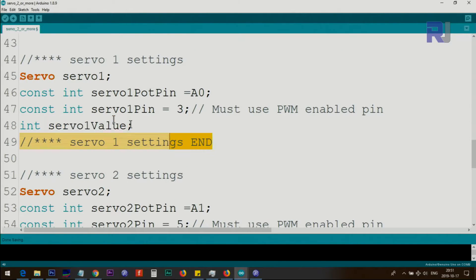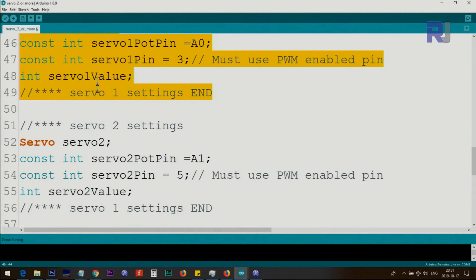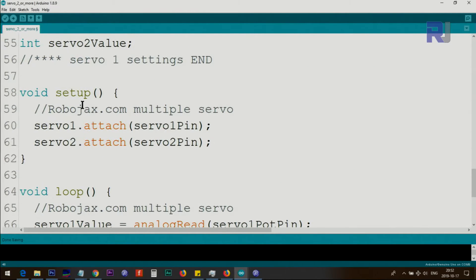This was for servo 1 and we do the same exact thing here. This time we create an instance of the servo, we call it servo 2, and then I just change the 1 to 2 here and assign another pin. This was analog 0, this is analog 1. Again servo pin 2, servo 2 pin is pin 5—it's also PWM enable pin—and then the value 1 has been changed to 2.